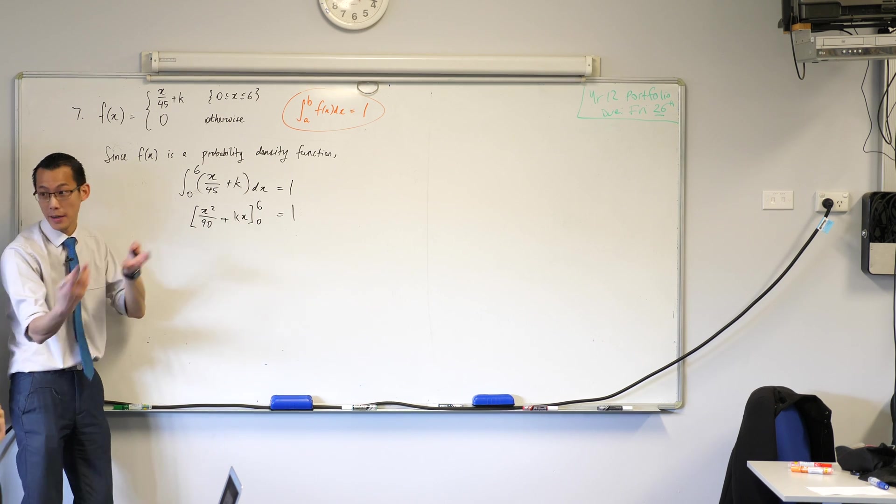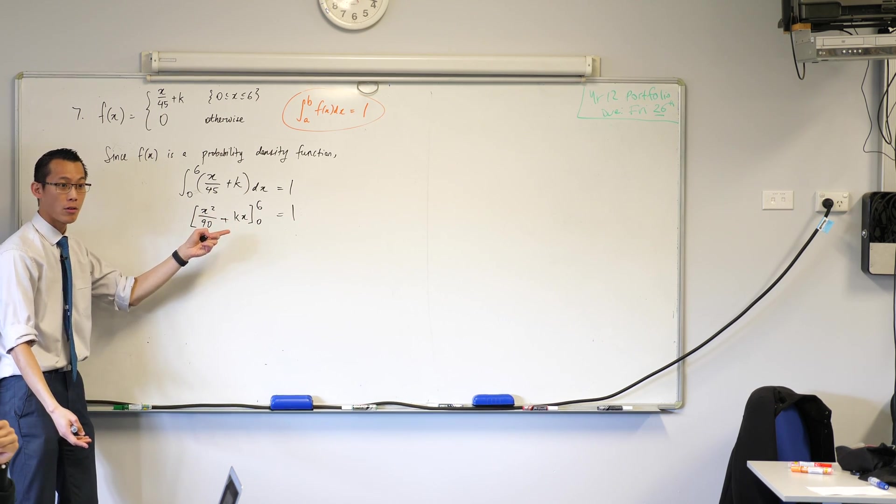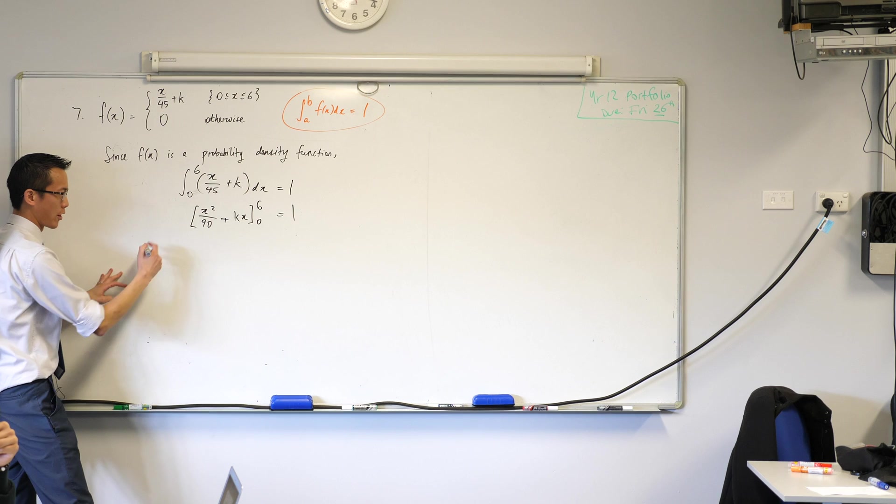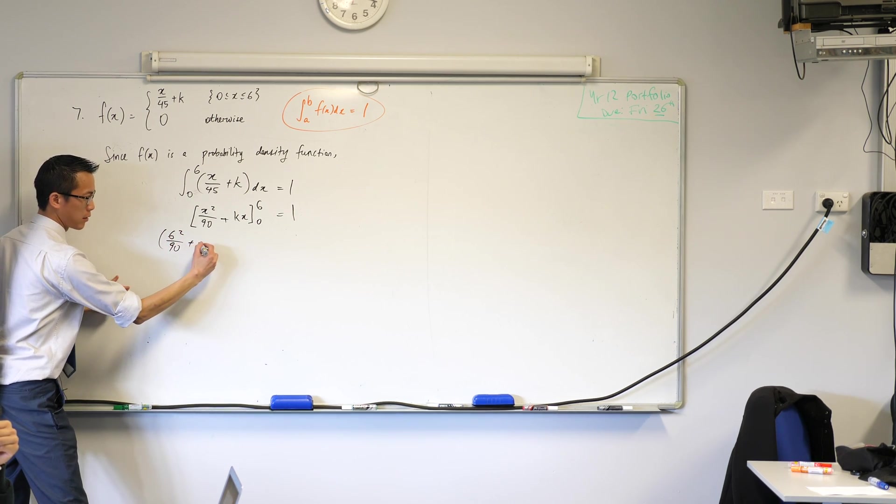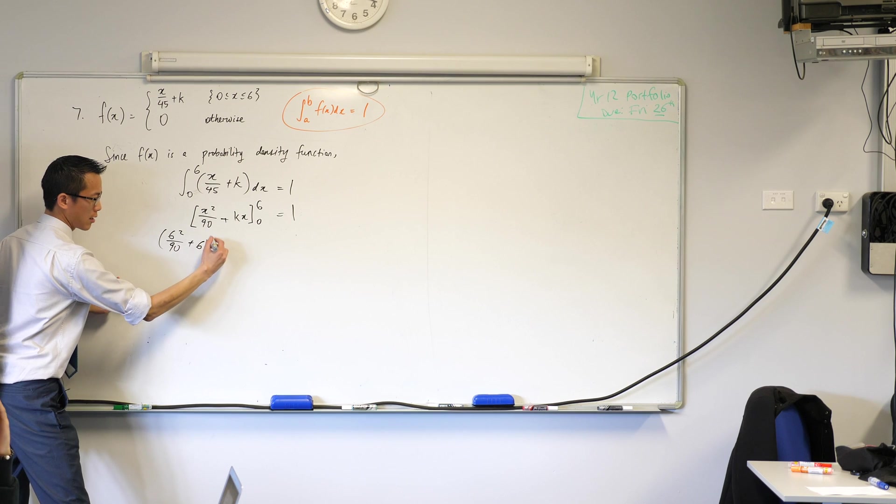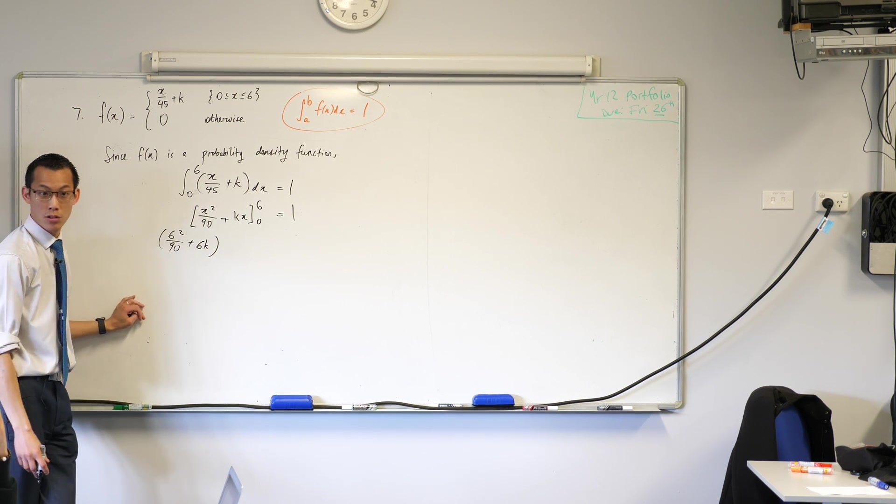Now, that's all right, because these 0 and 6 are going to replace all my x's. So all the x's will go, be replaced by numbers. The only unknowns will be k. So let's just go ahead, make sure we know what our working will look like. Here's my upper boundary. 6 squared on 90 plus 6k. Are you okay with my substitution?